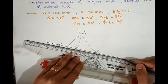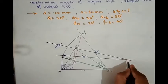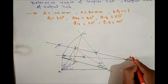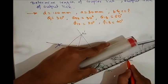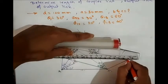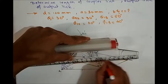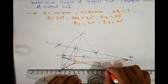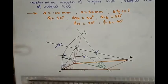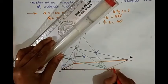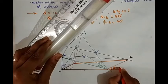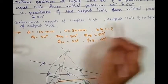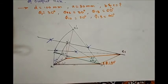The two mid-normals will intersect each other at one point, and that point is C1. Join D1 to C1, and C1 to B1, giving us the four-bar mechanism A1 B1 C1 D1. When we measure this angle, the initial position phi is equal to 30 degrees.